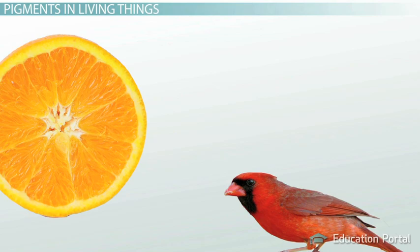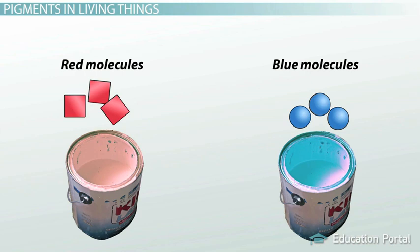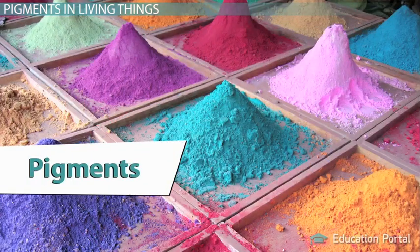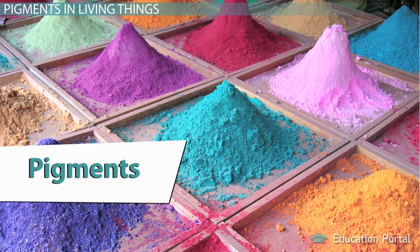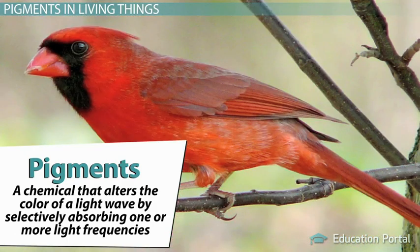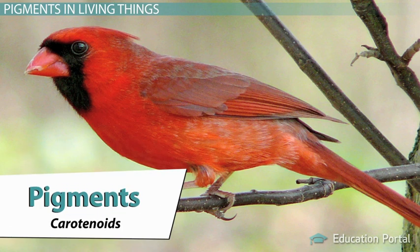Selective absorption occurs in just about everything that has color. It happens because of the specific properties of the molecules that make up objects. The molecules in red paint are slightly different from the molecules in blue paint. The molecules in red feathers are different from the molecules in blue feathers. In fact, most living things use special chemicals called pigments to make their bodies appear a certain color. A pigment is a chemical that alters the color of a light wave by selectively absorbing one or more light frequencies. The feathers of a male cardinal are made red by special organic pigments called carotenoids.